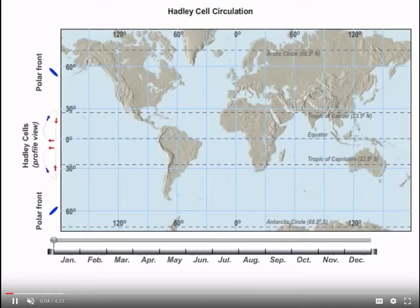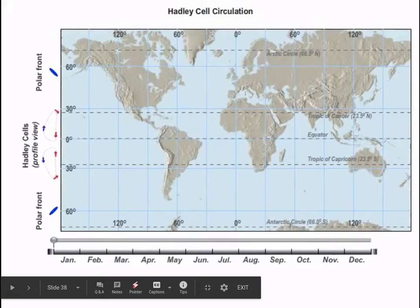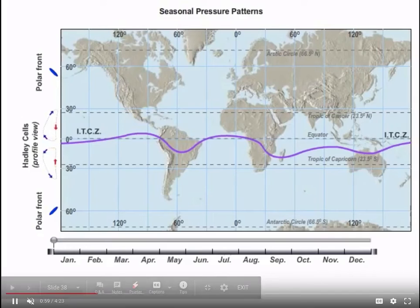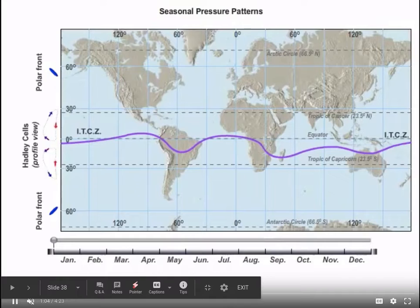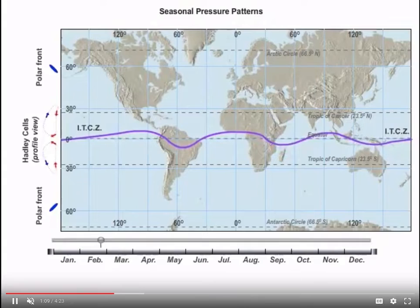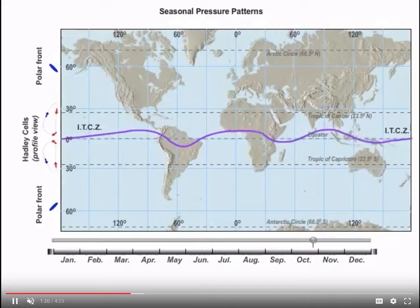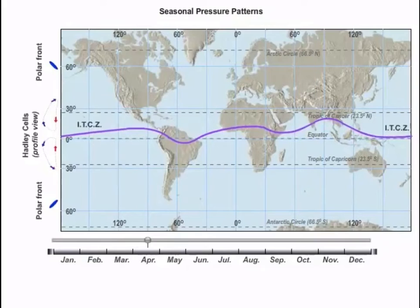Here's another video from Pearson. You can see the Hadley cells with air rising over the equator, sinking over the tropics, creating high pressure and dry conditions. You can see the position of the ITCZ — this has to be winter conditions with the ITCZ over the southern hemisphere. In the summertime, the ITCZ moves north, and then in the wintertime the ITCZ shifts south. In summer, that creates the Asian monsoon; in winter, the ITCZ shifts south.